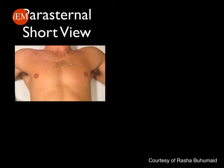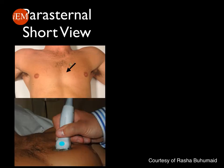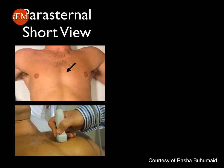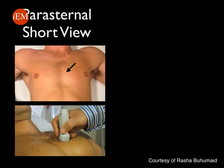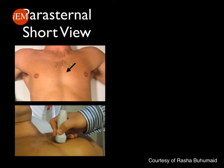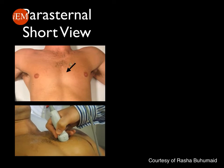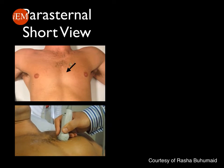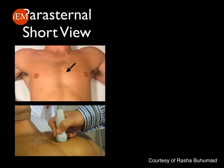To obtain a parasternal short view, you keep your probe exactly where it was in the parasternal long view, between the third or fourth intercostal space, and you just rotate the probe marker so that it is pointing towards the patient's right hip this time. The image you obtain depends on the angle of your probe. Note the sonographer is tilting the probe towards the patient's right shoulder and then towards the apex, which will produce different images.